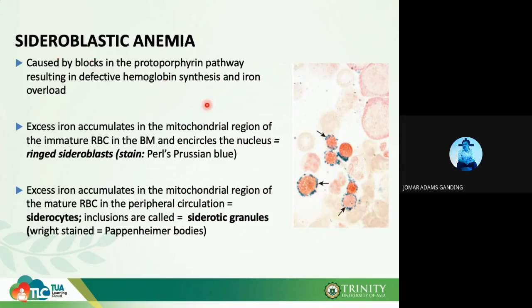The hallmark of sideroblastic anemia is the presence of sideroblasts and siderocytes. Ring sideroblasts are observed using Pearls Prussian blue stain, while siderocytes with Pappenheimer bodies are observed using Wright stain.